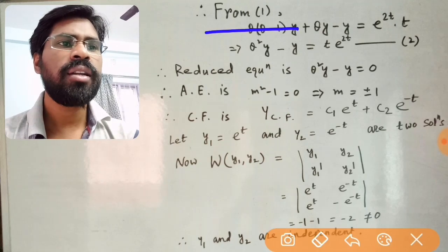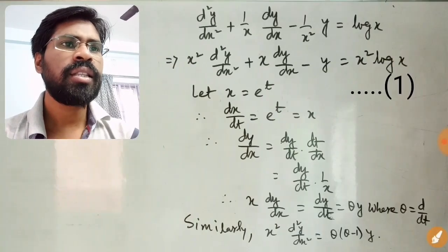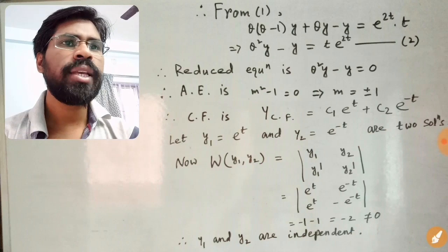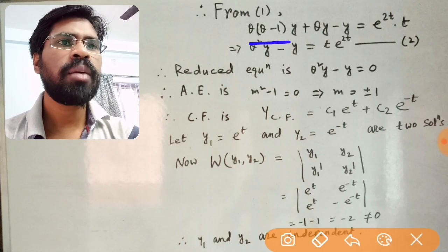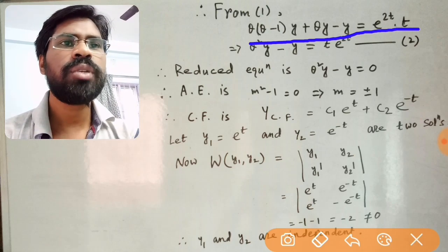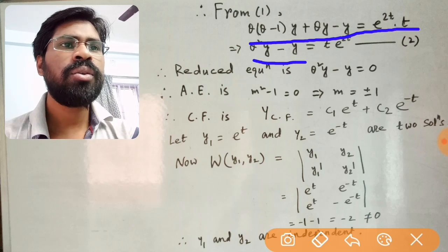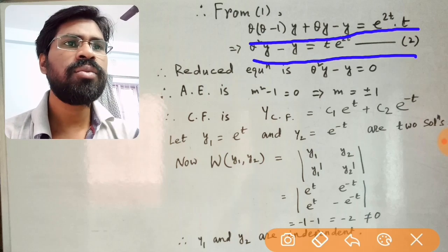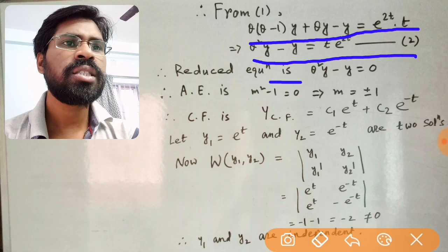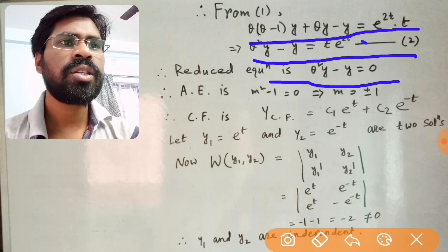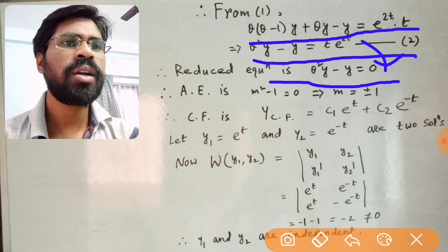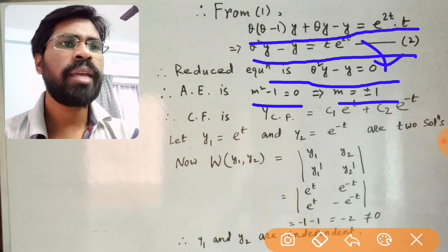Therefore, from equation 1 we get θ(θ − 1)y + θy − y = e^t · t. The reduced equation is θ²y − y = 0, setting the right-hand side to 0. Therefore the auxiliary equation is m² − 1 = 0, giving m = ±1.